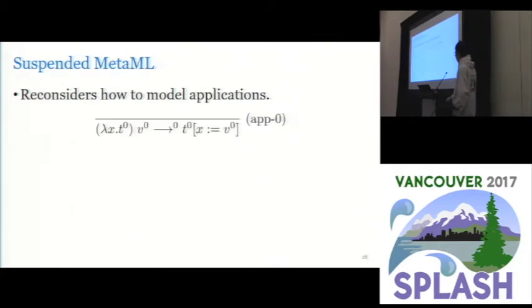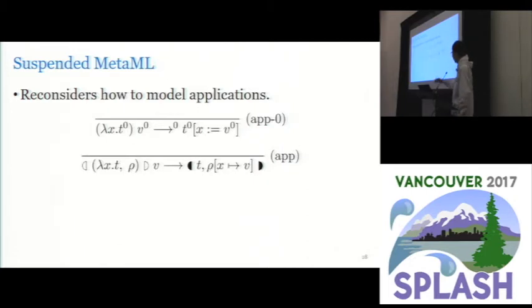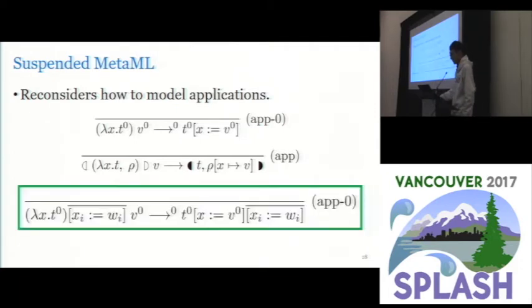We also reconsider how to model applications. This is what we did in explicit MetaML. In a conventional environmental semantics, performing an application is like updating the environment. Here in suspended MetaML, we promote the substitution from the variable, overriding any existing substitution for that variable. So here some Xi may be equal to X. This is just imitating updating the environment.